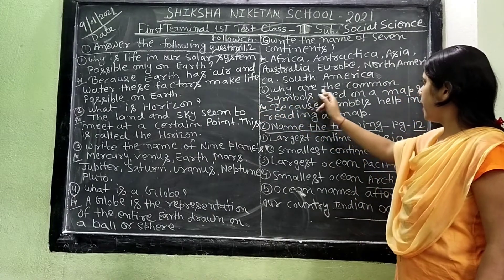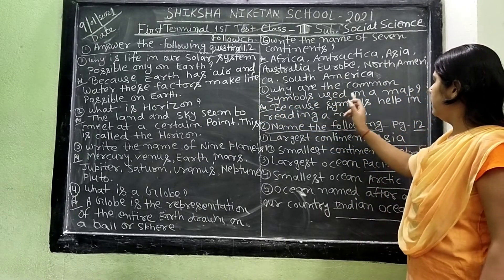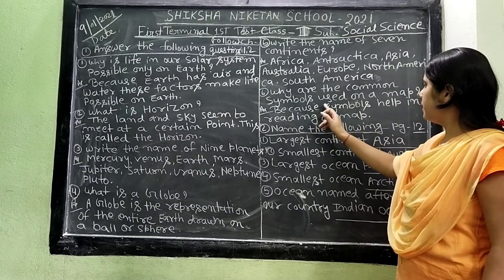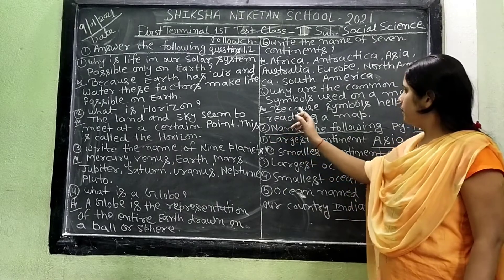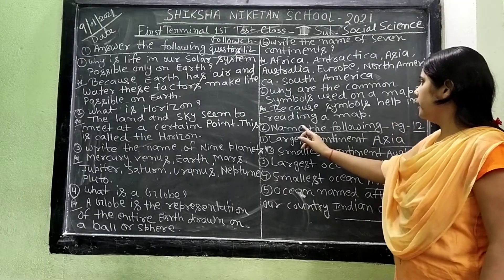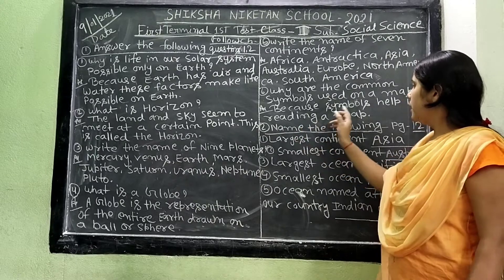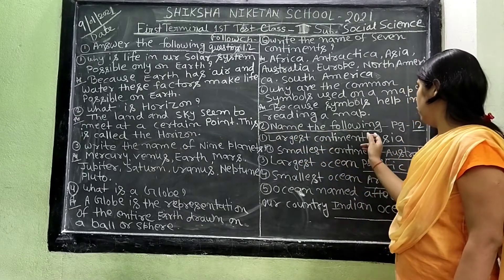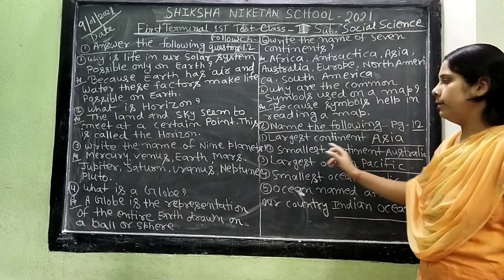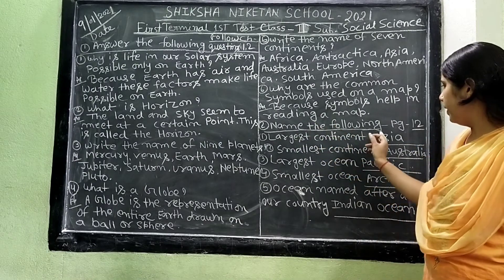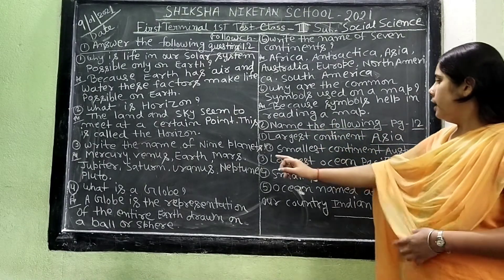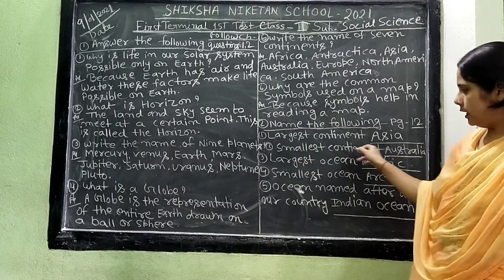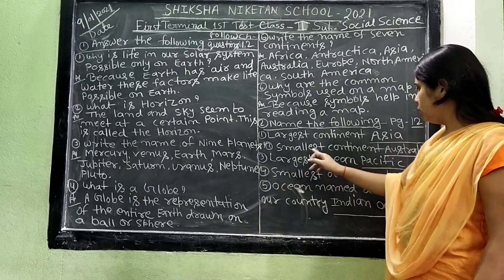Question number 6: Why are common symbols used on a map? Question number 7: Why are common symbols on a map?